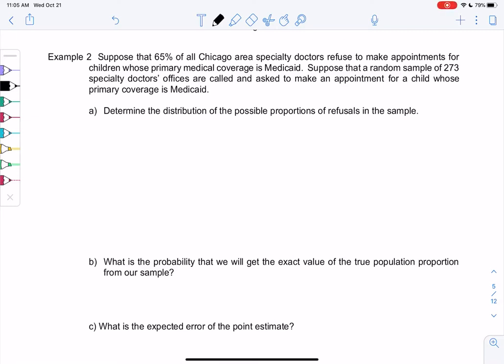Section 7-2, example 2. Suppose 65% of all Chicago-area specialty doctors refuse to make appointments for children whose primary medical coverage is Medicaid. So in a weird way, our success is refusing appointments. So in real life, that's not a success, but that's what we're measuring. So 65% do not get medical appointments, so 0.65 is my P.